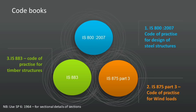Various code books are available as guidelines for engineers. The primary code is IS 800:2007, the Code of Practice for Design of Steel Structures, based on Limit State Design. IS 875 Part 3 provides wind loads on structures. IS 883 is the Code of Practice for Timber Structures, used in Module 6. SP6 (1964) is the steel table providing sectional details of each section to be selected.